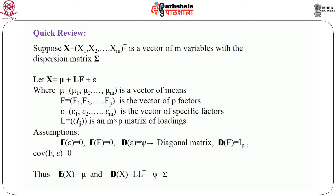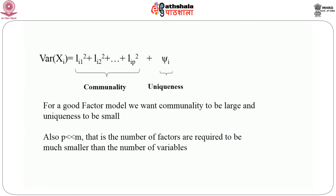This is known as an orthogonal factor model. With these assumptions, the expected value of x equals mu and the dispersion matrix sigma is of the form L*L' + psi. The variance of the i-th variable x_i is given by the sum of squares of the elements of the matrix L corresponding to the i-th row. For a good factor model we want communality to be large and uniqueness to be small. Also, it is desired that p, the number of factors, is much smaller than the number of variables m; otherwise there is no point in doing factor analysis.